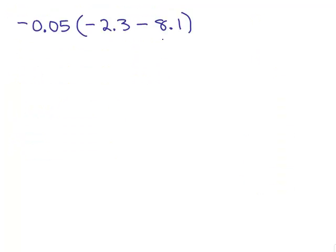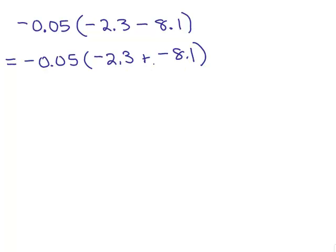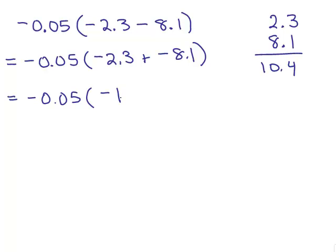Why don't you try this problem? Put the video on pause and see if you can get through the whole problem on your own. Same thing — we have to start by simplifying within parentheses. We still have this negative 0.05, and we need to simplify inside parentheses. I'm going to change that subtraction to adding the opposite. This time we're adding two negatives — when you add two negatives, your answer will be negative. It's like going further in the hole. They have like signs, so we add and line up our decimal point. This will be negative 10.4.